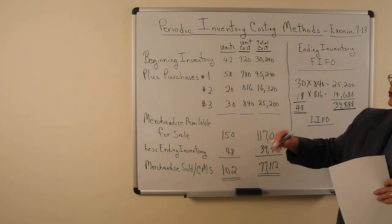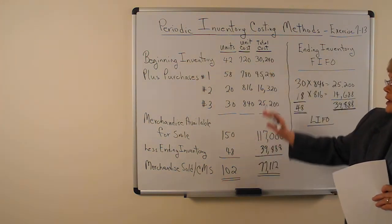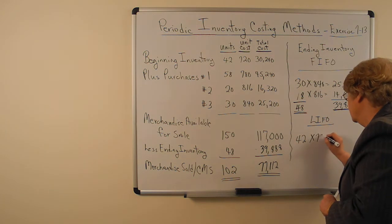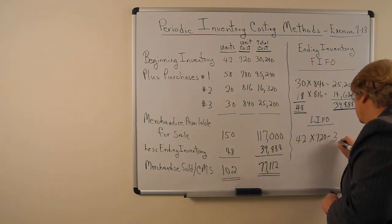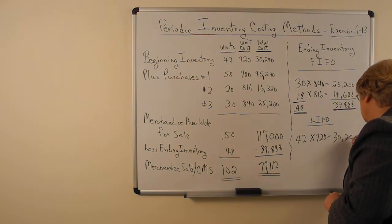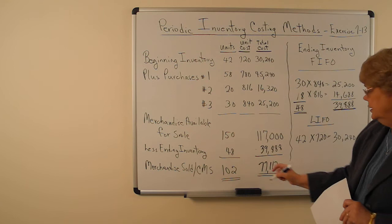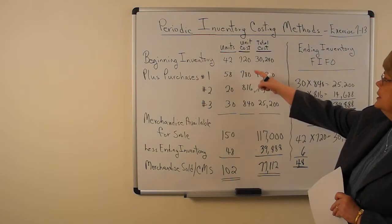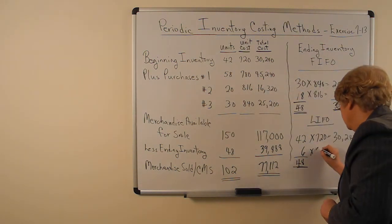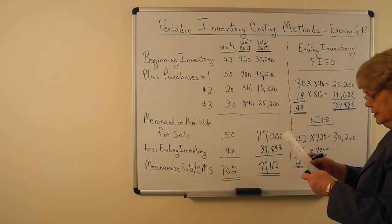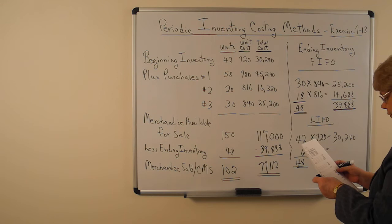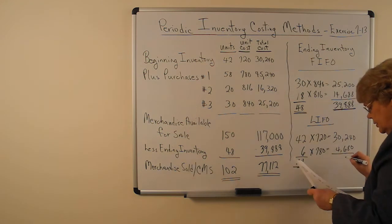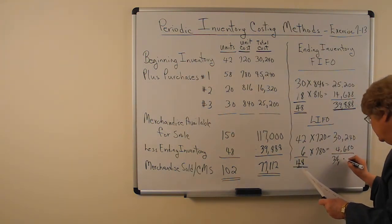So if you're looking for ending inventory under LIFO, you're going to go to the top. We have 48 to account for, so we look at the 42 units at the top at a cost of $720, which is $30,240. We need six more to get to 48, and those six units are at $780, which is $4,680 — for a total ending inventory of $34,920.